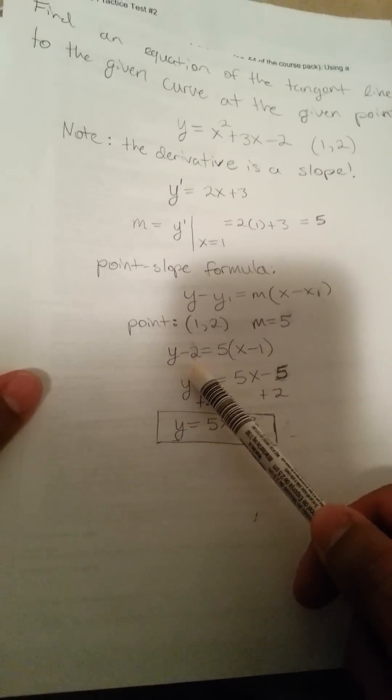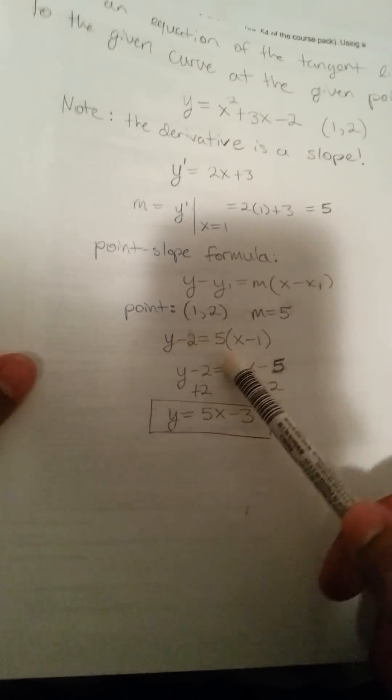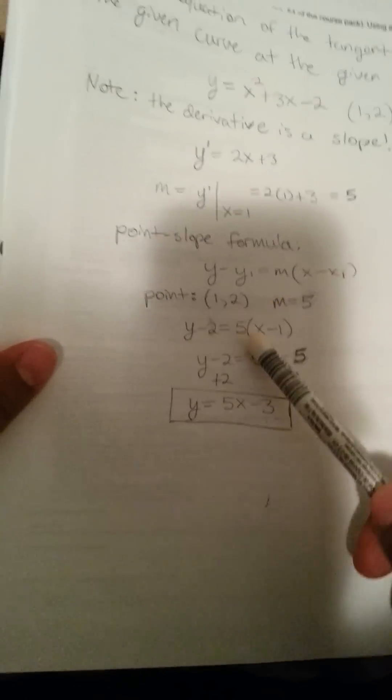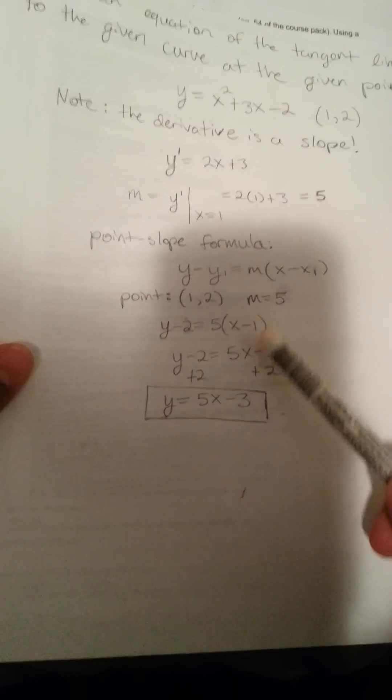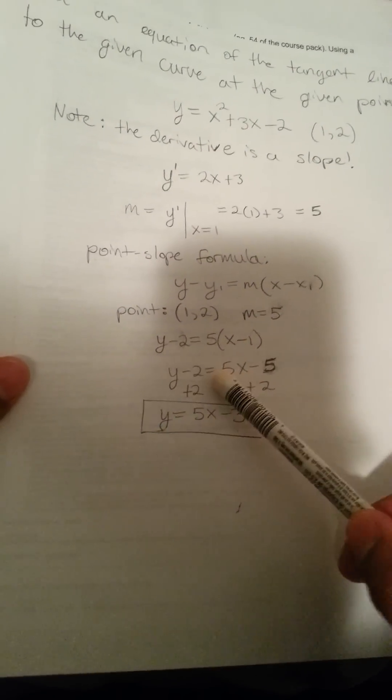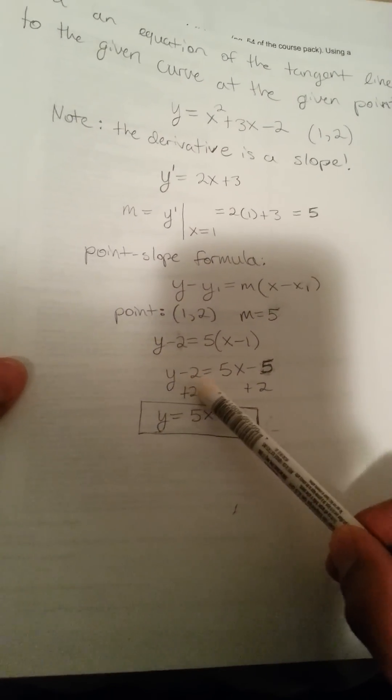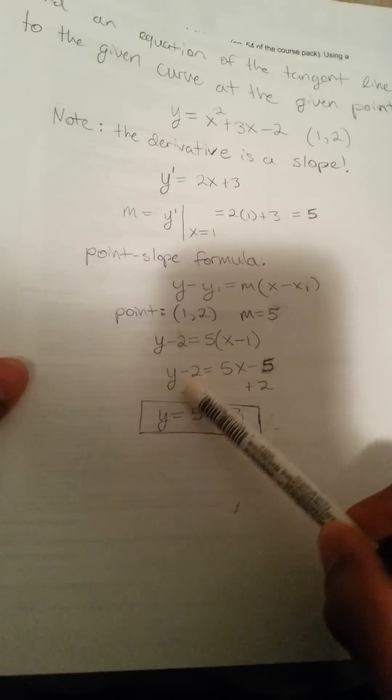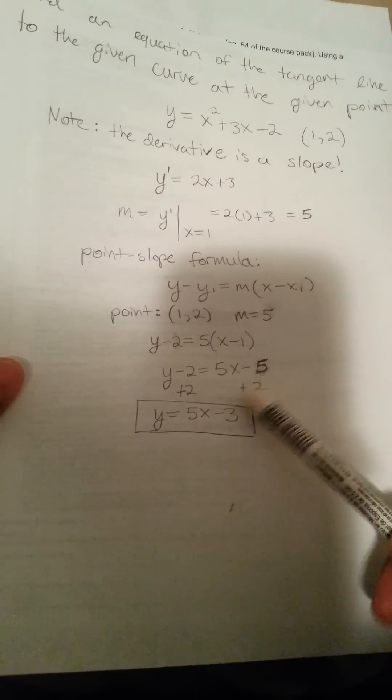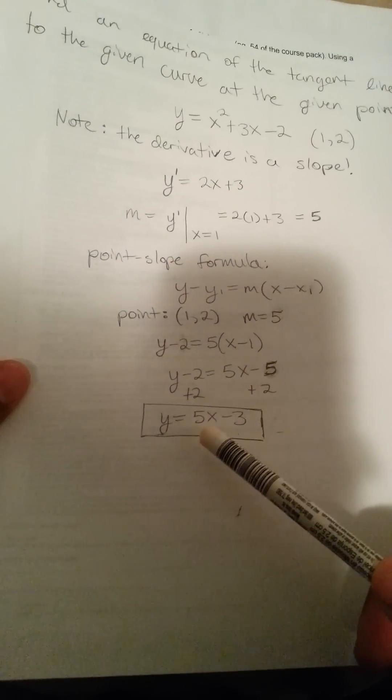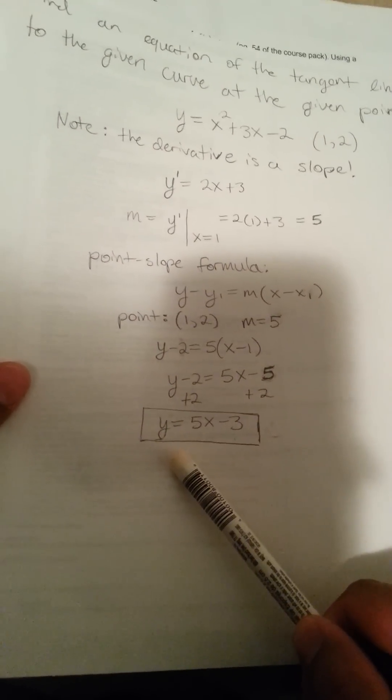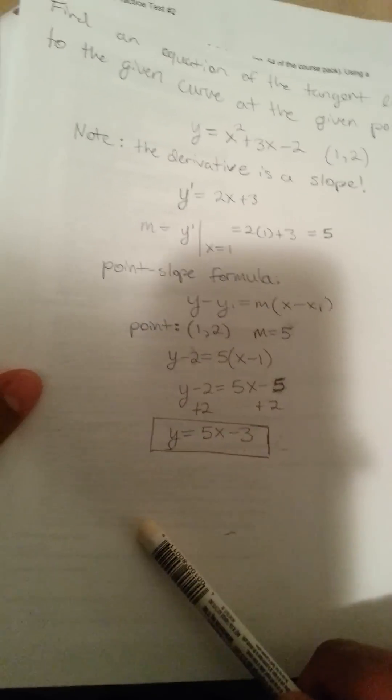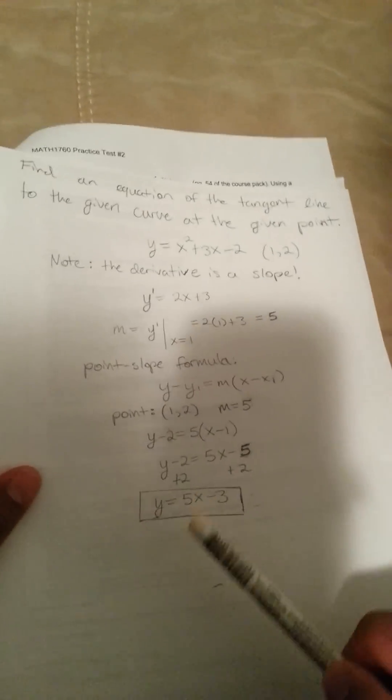Now we have y minus 2 equals 5 times x minus 1. We'll distribute that across, and bring everything down. So, we have y minus 2 equals 5x minus 5. We add 2 to this side, and what we'll end up with is y equals 5x minus 3, and this is the equation to the tangent line of the given curve.